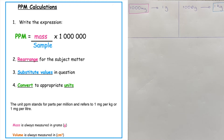But where does that one million come from? In the advanced higher core specification, it says that the unit ppm stands for parts per million and refers to one milligram per kilogram or one milligram per litre.